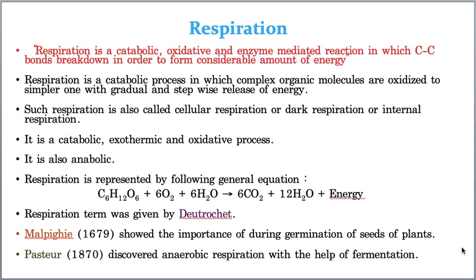Let me explain it in an easy way. Let us take a person named Rama. In Rama's body, let us consider 10,000 chemical reactions are taking place. The sum total of all these chemical reactions — all 10,000 — is what you call metabolism. The sum total of all the chemical reactions that take place in the body of an organism is called metabolism.